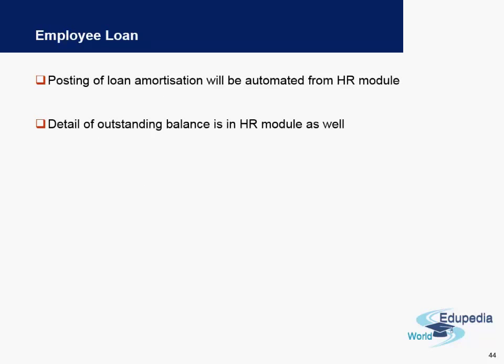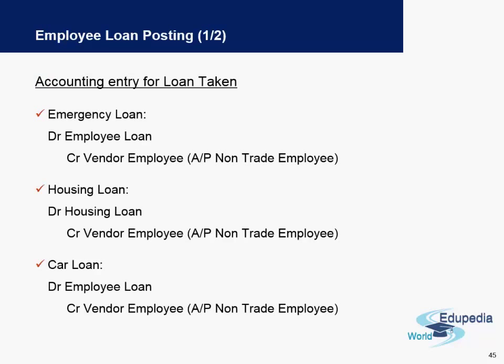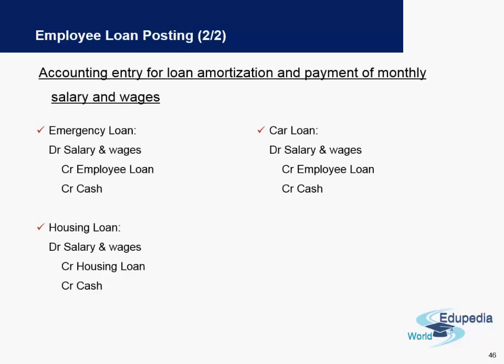The next topic is employee loan posting. Loan amortization will be automated from the HR module — HR stands for Human Resources, also called Human Capital Management. Loan amortization is mainly not a finance topic; only the amount which comes into accounting is handled in accounts receivable. All other details related to the loan given to an employee, as well as any outstanding balance, are part of the HR module.